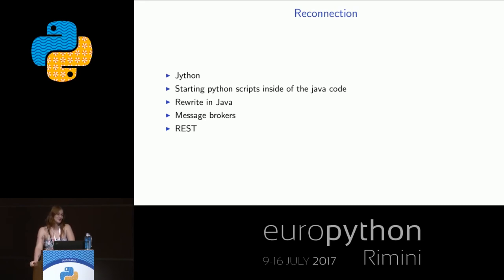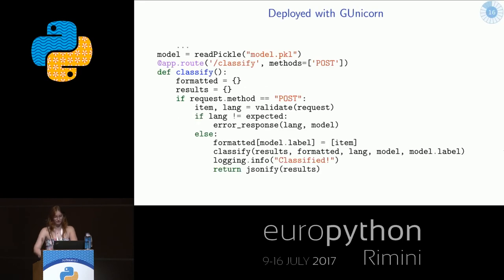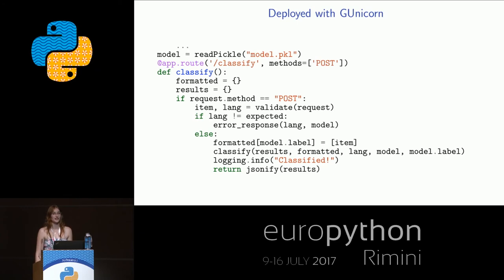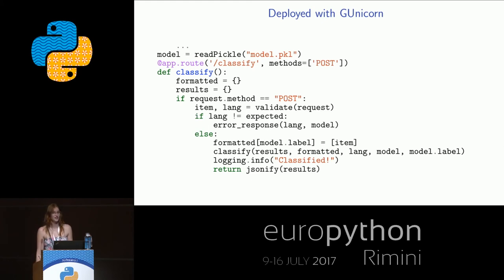So I took the microservices approach and built a REST application. We used Flask as our web server, deployed it with Gunicorn, and used the Jersey Client on the Java side. They exchange a simple JSON saying: 'I have this item with this title and this description, please tell me something.' And the result comes back: 'I'm the Python service, here's my answer, and this is the model I used.'